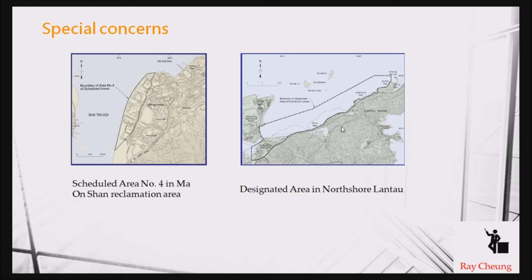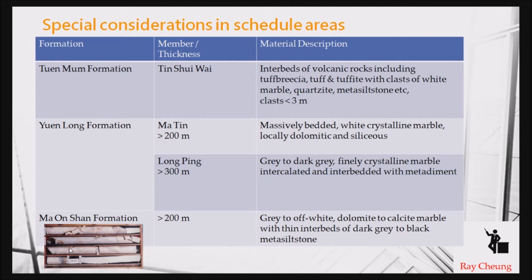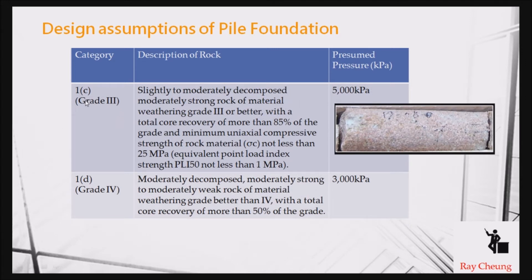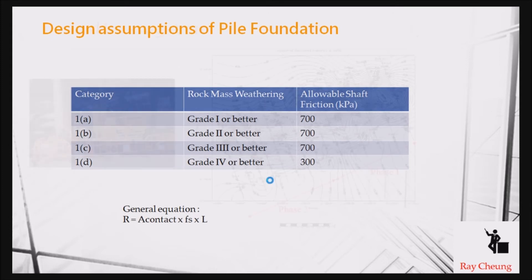Sometimes the rock head level is very deep due to weathering. You can see some examples in the drilling records — marbles visible here, and sometimes you can see voids in between, meaning you cannot retrieve a core sample from below the ground at certain depths. As a typical assumption in Hong Kong, we use a rock strength of 5,000 kPa per square meter.